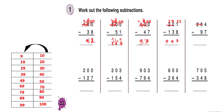Going to the fifth one. We borrow 1 from the 2 — the 2 becomes 1 — and the 0 becomes 10. Then we borrow 1 from it again, so it becomes 9, and the units digit 4 becomes 14. So 14 minus 7 is 7, 9 minus 9 is 0, and 1 minus 0 is 1. The final answer is 107.